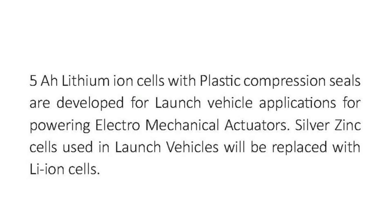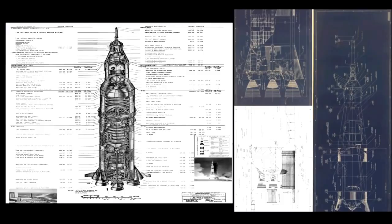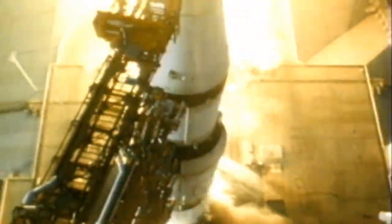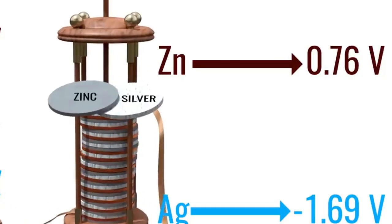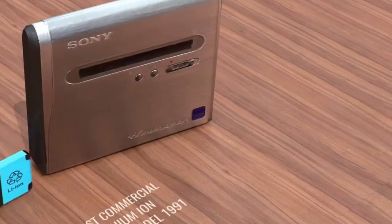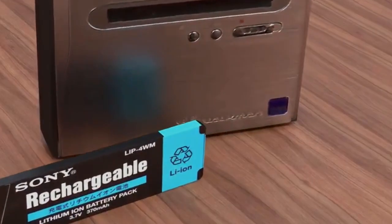Another lithium-ion cell of 5 ampere-hour with a plastic compression seal has been developed for launch vehicle applications, for powering electromechanical actuators. The silver-zinc cells used in launch vehicles will be replaced with lithium-ion cells. The performance of the 5 Ah lithium-ion cell at different rates is shown here. Currently, ISRO launch vehicles are powered by silver-zinc cells. Lithium-ion cells have a higher operating voltage than silver-zinc cells, which reduces the number of cells in the battery, with higher energy density and longer cycle life.